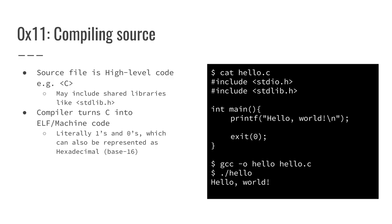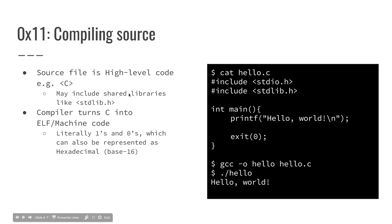In any case, this main function that we're worried about, called main, actually makes use of this thing called printf, which is a shared library function, which we're really not going to get into today. We're going to mostly just look at this assembly reversing of non-system library functions that are huge and complicated.